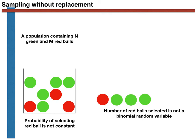We can calculate the probability of observing the sequence shown here quite easily. The probability of selecting a red ball in the first trial is the familiar 4 over 12, or one third. Once the red ball is removed, there are eight green and three red balls remaining in the cup. The probability of selecting a green ball in the second trial is thus 8 over 11. There are now seven green balls left and three red balls, so the probability of selecting a green ball is 7 over 10. This leaves six green and three red balls, so the probability of selecting a green ball during the final trial is 6 over 9. All four of these events are independent, and we can thus calculate the probability of the sequence red, green, green, green by taking the product of these four fractions.